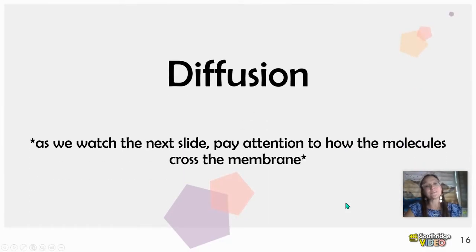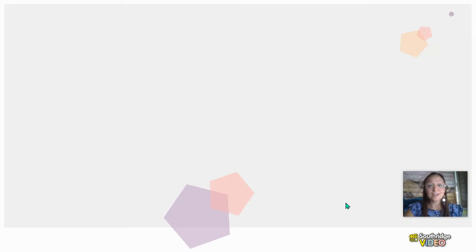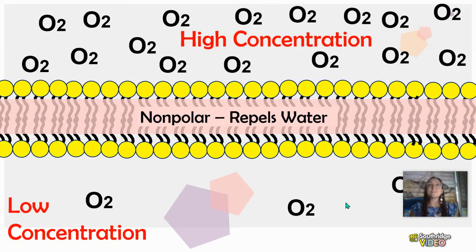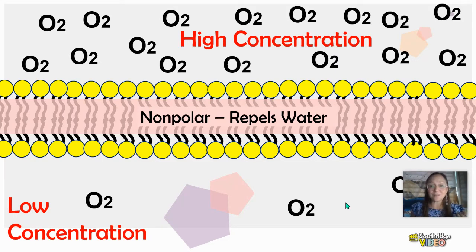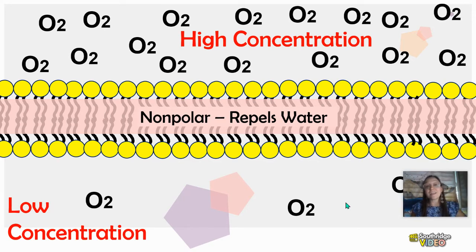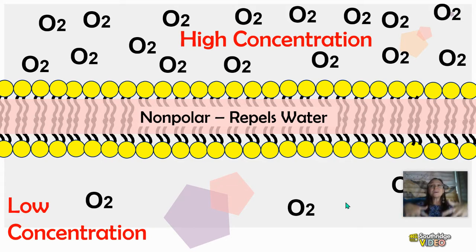The first type of transport we're going to talk about is diffusion. Diffusion is one of the simple ways that molecules can enter or leave a cell. We want to remember from our cell membrane video that the cell membrane center is non-polar. Therefore, other non-polar molecules like oxygen, carbon dioxide, or even lipid-based hormones can pass right through that cell membrane.